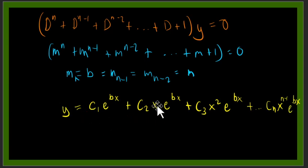As you can see, the degree of x is ascending up to n minus 1, and our number of arbitrary constants is equal to n. So now we have this equation.